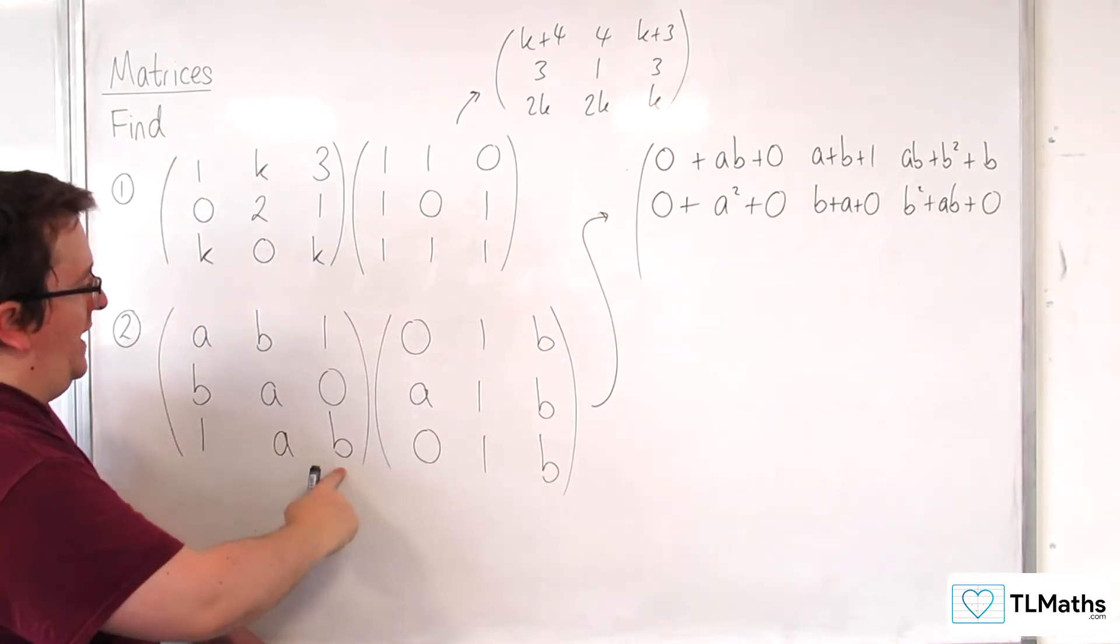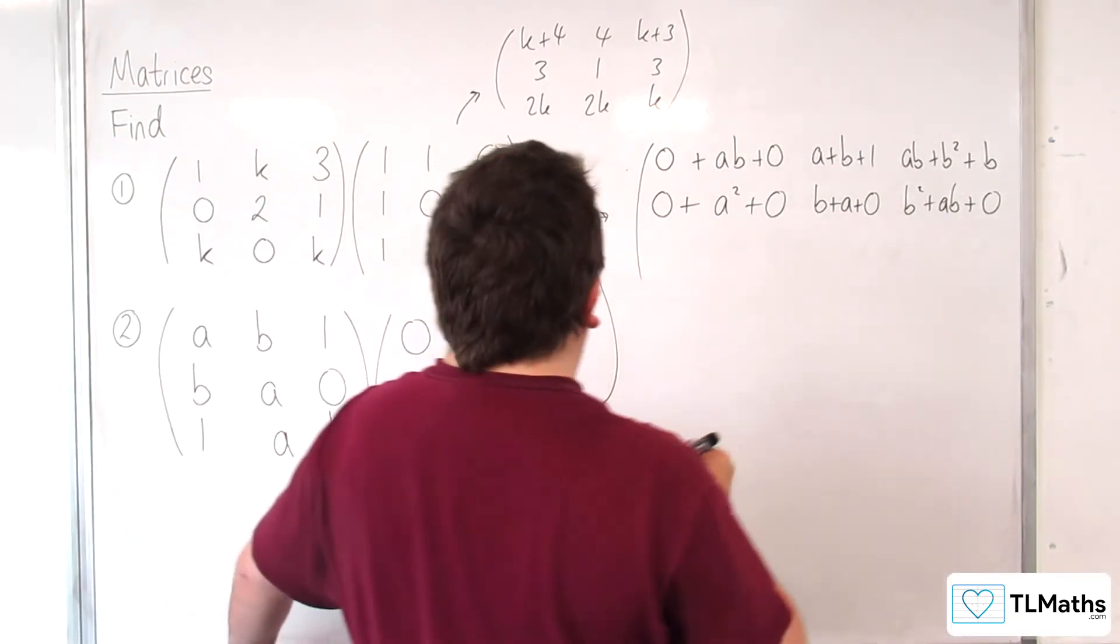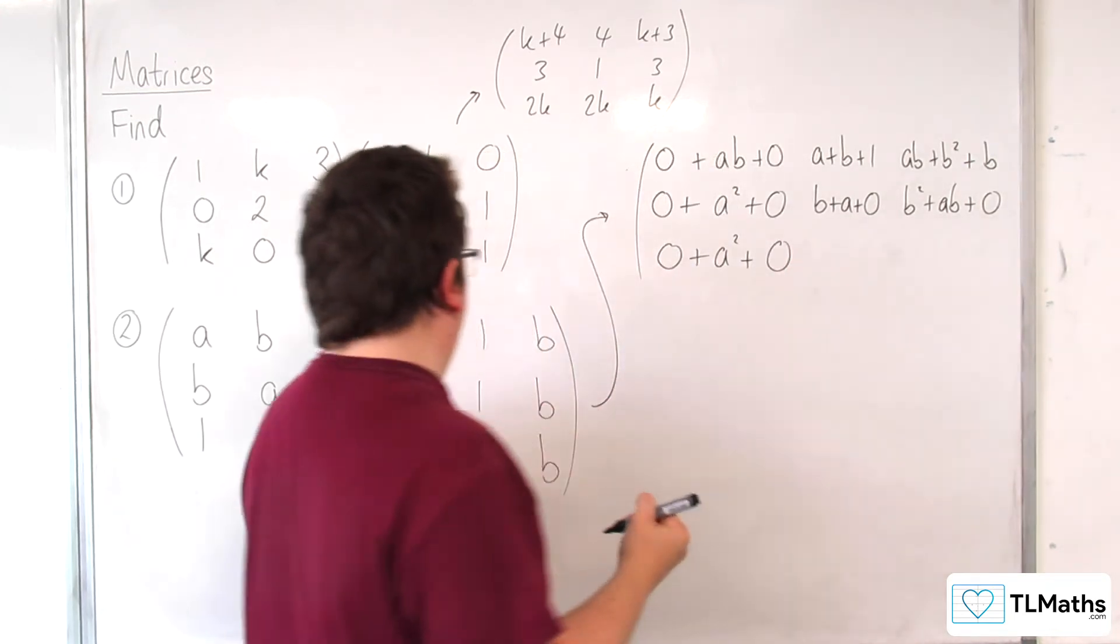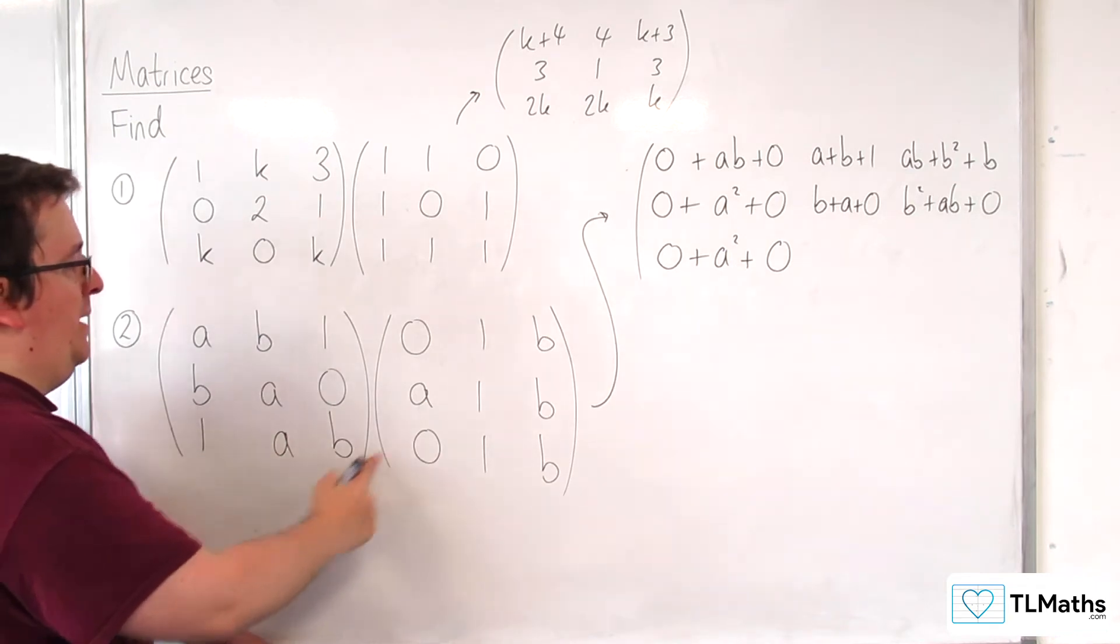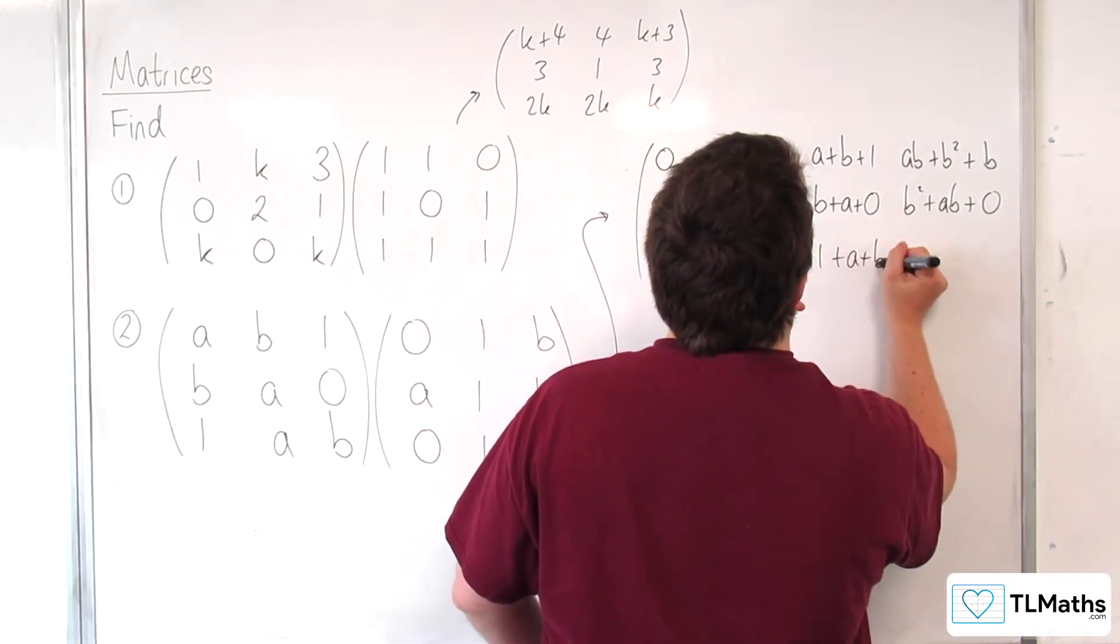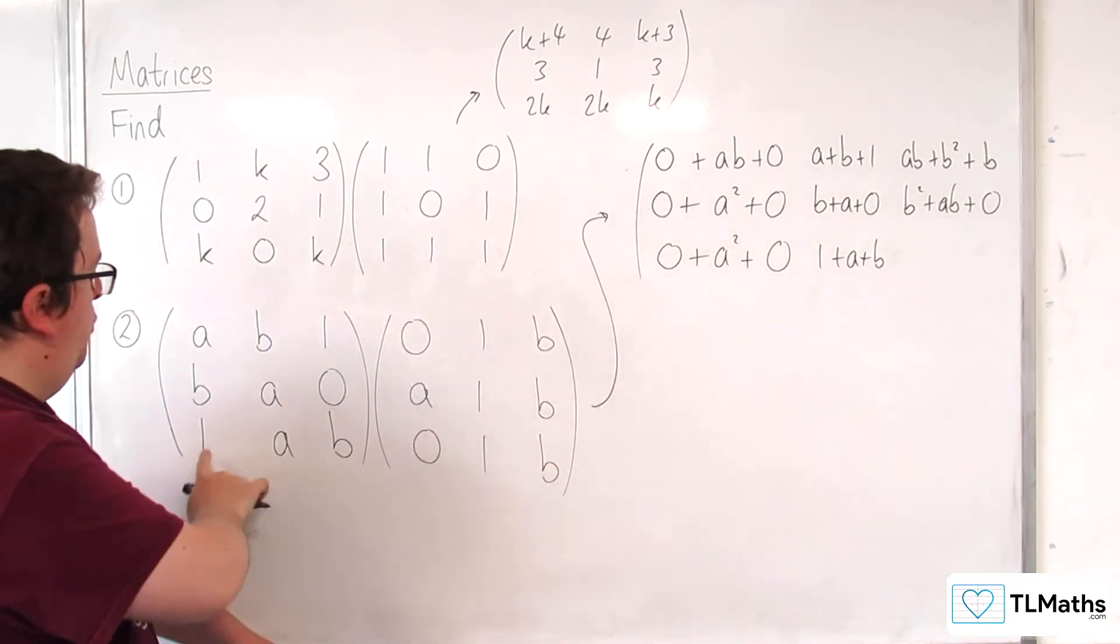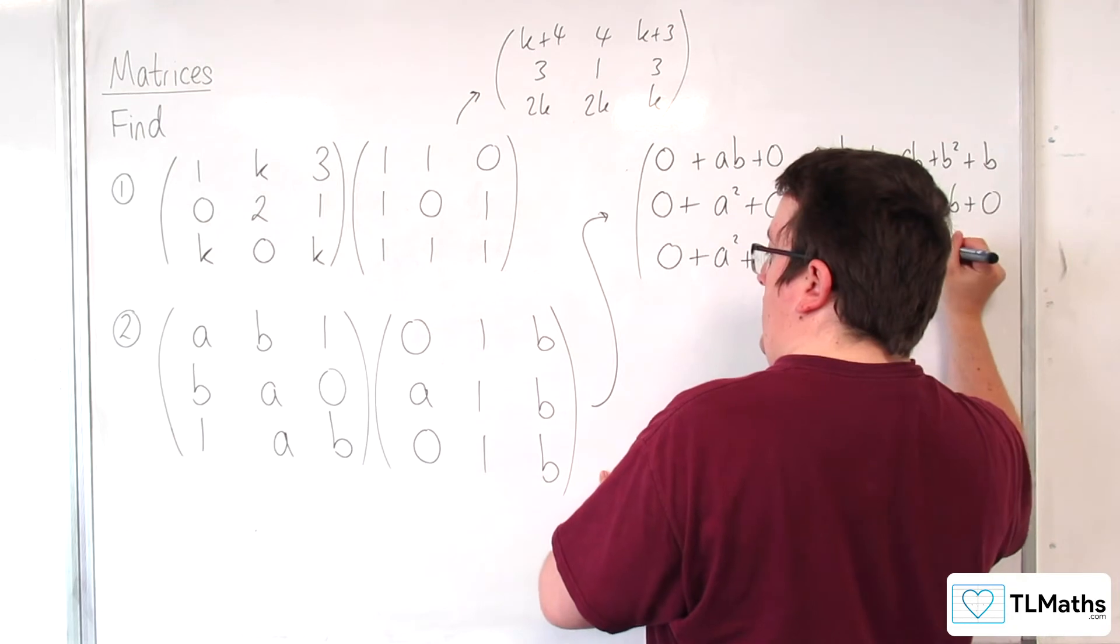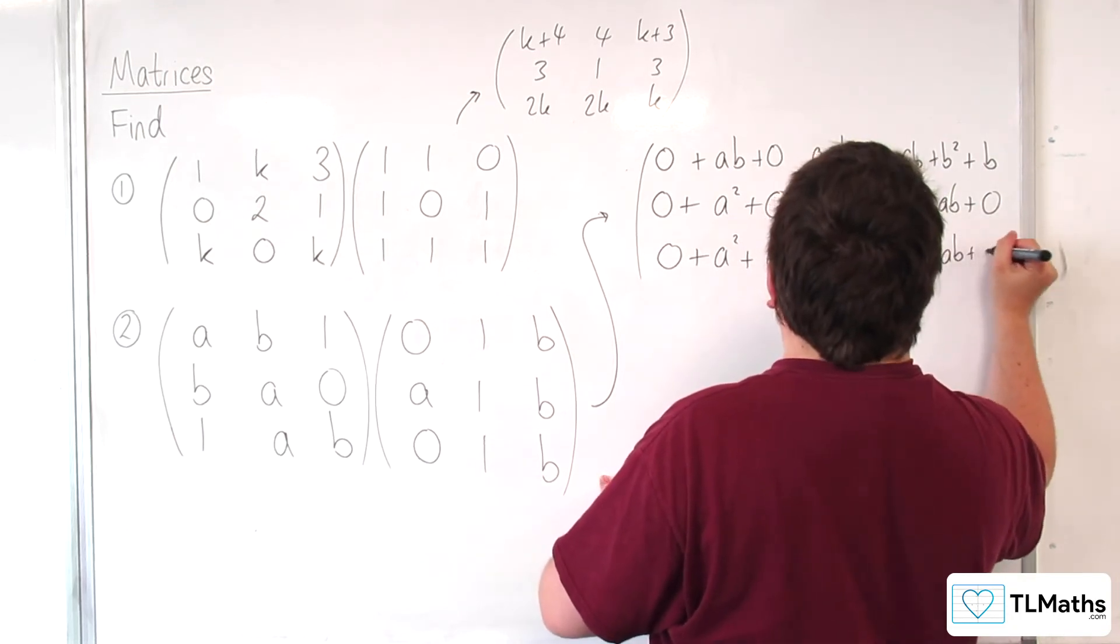Then 1ab times 0, a, 0, so 0, plus a squared, plus 0. Then 1ab times 1, 1, 1, so 1, plus a, plus b. And then 1ab, times bbb, so b, plus ab, plus b squared.